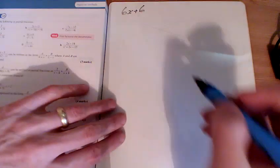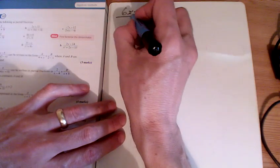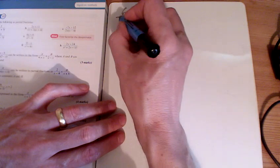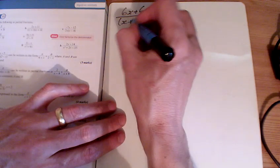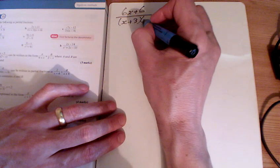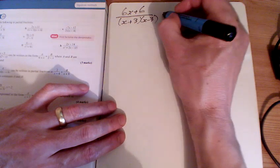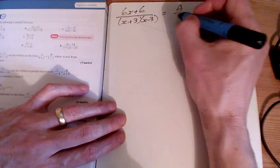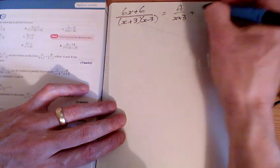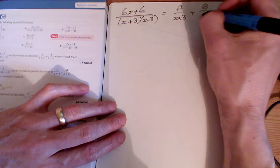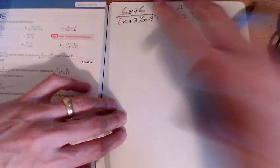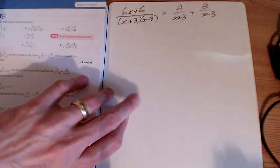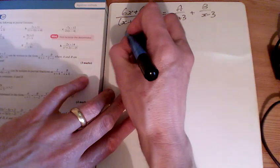For E, we've got 6x plus 6. You know it factorizes, but you don't worry about that. It's the bottom we do need to factorize, though. x squared minus 9, we have to know that's the same as x plus 3 and x minus 3. And so we're going to split this into A over x plus 3 plus B over x minus 3. Now, if someone factorized that round the other way, they might have their A and B round the other way. The answers wouldn't end up being the same.